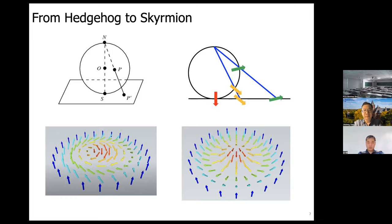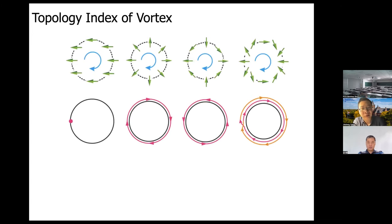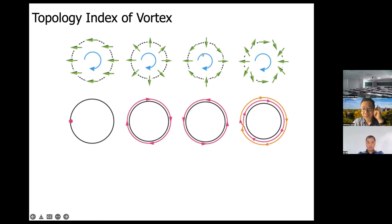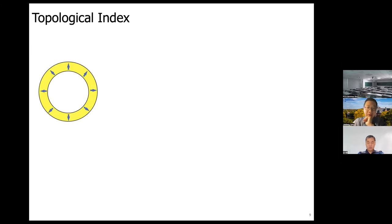Every topological configuration should have a topological index. Starting from the vortex, there are different types characterized by the number of spin rotations while traversing the vortex. For one configuration the spin rotates by 2π, for another by −2π. The spin rotation in units of 2π is the topological index of the vortex, or winding number, which can be compactly written as the total derivative of the angle θ divided by 2π.